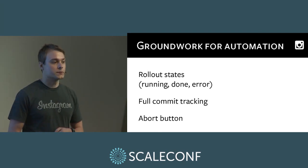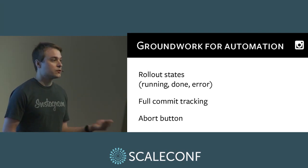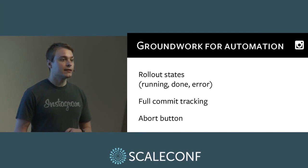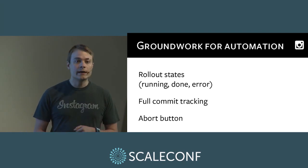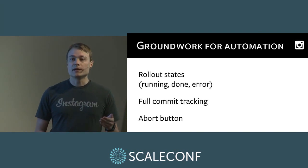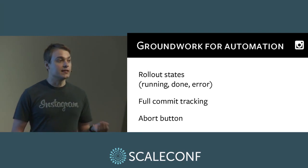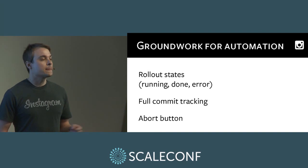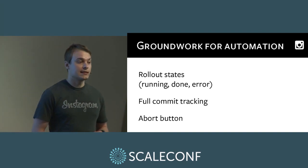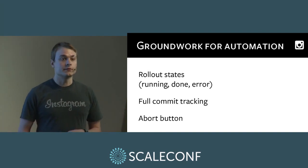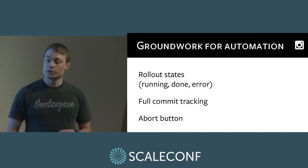Then we added the abort button. When a rollout was running, an abort button would appear in the UI. If you hit it, the status would change to 'aborted', and the rollout script occasionally checked the status in the database and would abort if it noticed this change.